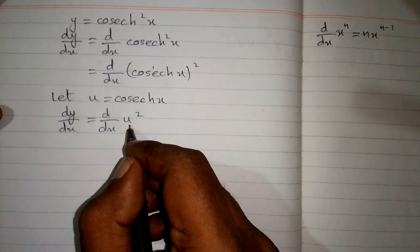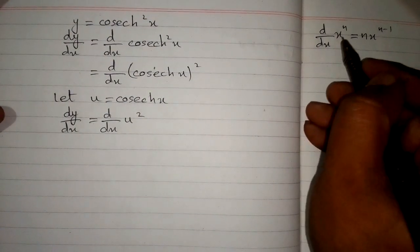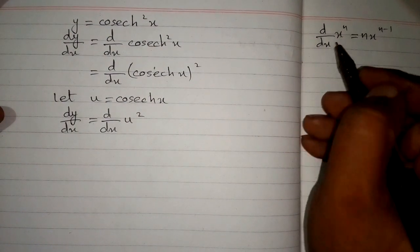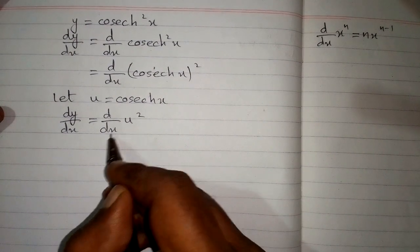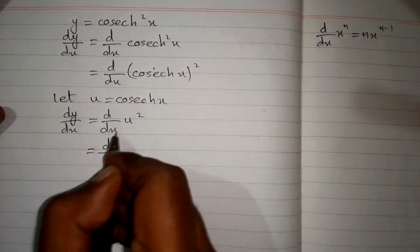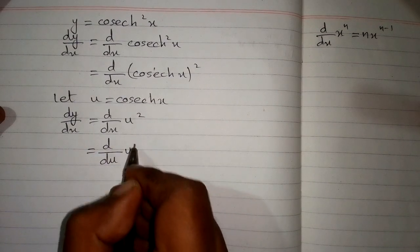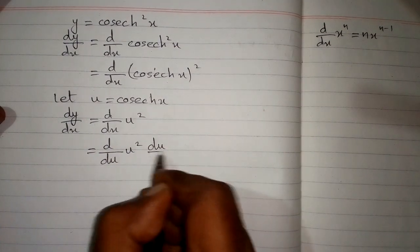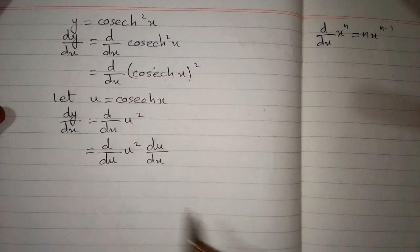So we can apply this formula, but this variable and this variable must be the same, and here we can see that they are different. So we will apply the chain rule and replace this dx by du and multiply it by du/dx. This is the chain rule of differentiation.